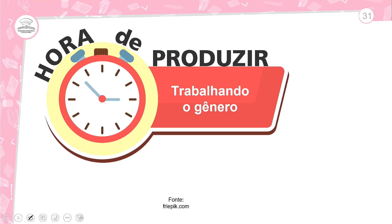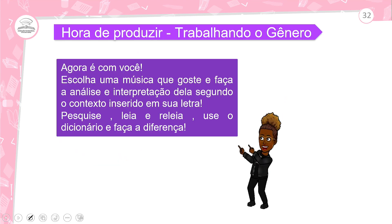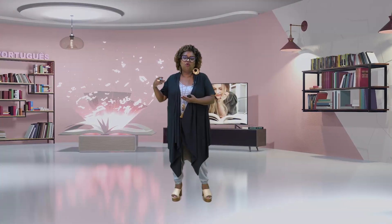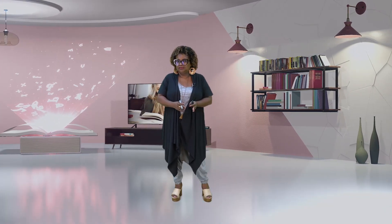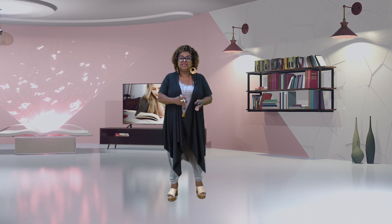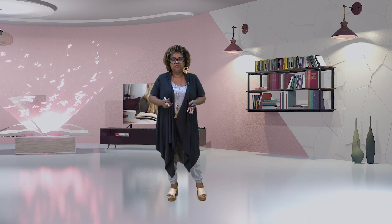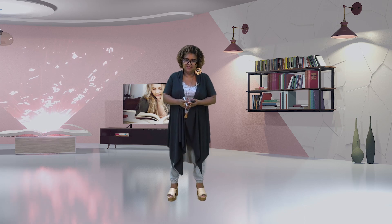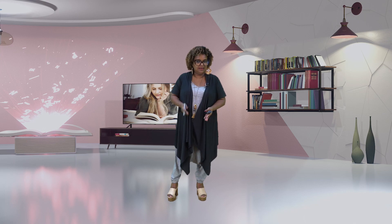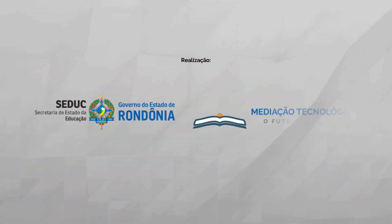Na hora de produzir, trabalhando o gênero: escolha um estilo de música que você gosta, analise a música e veja se há algo relacionado a outro texto — se ela conversa com outro texto. Depois faça a sua escrita, o seu comentário. Ficamos por aqui e daqui a pouco voltamos para o nosso momento de revisão. Tchau!